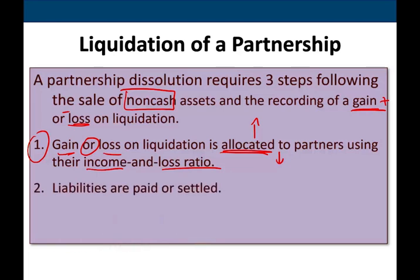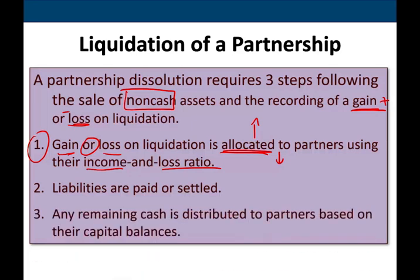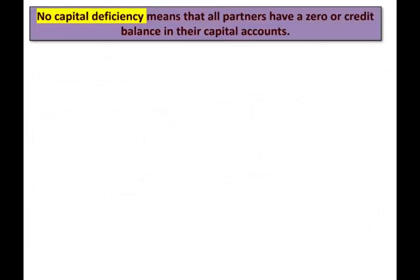After allocating the gain or loss, your liabilities are settled — you pay off your liabilities. That's logically how things happen: you sell everything, pay your obligations first, and anything remaining after your obligations goes to the partners — the owners of the business. That's basically the logical step of closing the business. The best way to illustrate those steps is to work through an example.